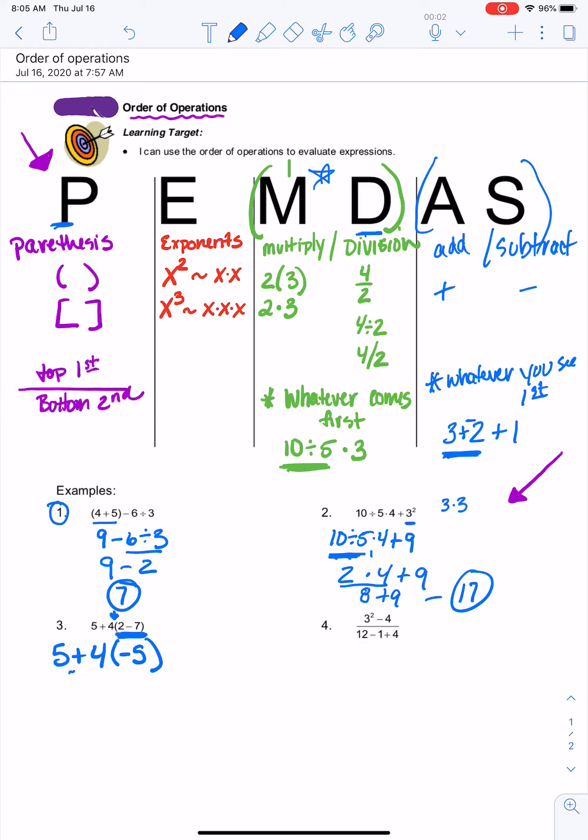Now I have addition and remember, this means multiplication. So multiplication is always going to come before addition. So 4 times negative 5 is negative 20. I have 5 minus 20, which gives me negative 15.